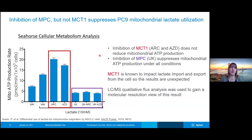If we take a deeper dive into the PC9 cells and look at what is actually helping the cells use lactate for energy, we did inhibition studies — inhibiting MCT1 in the red boxes and inhibiting MPC in the purple boxes. What we found is that inhibition of MCT1 does not actually reduce the amount of mitochondrial ATP production, but inhibition of MPC did reduce it. This was interesting because MCT1 is the known lactate transporter, but in this particular case it doesn't seem to be helping with the import of lactate into the cells for fuel utilization.